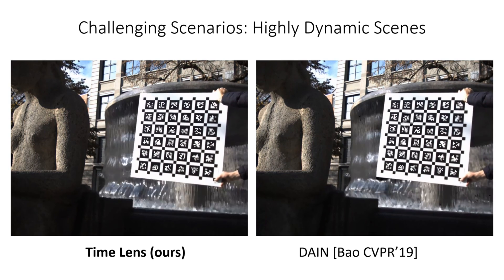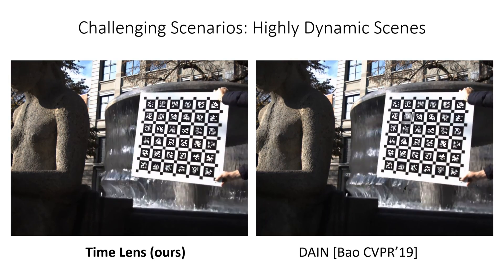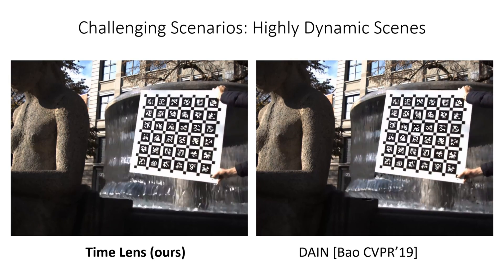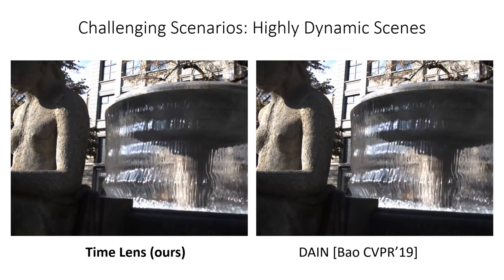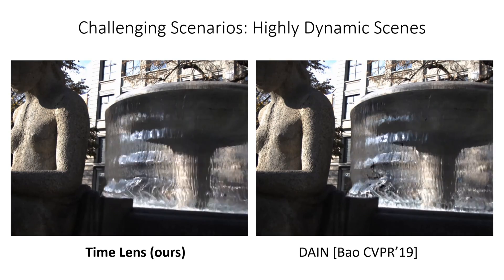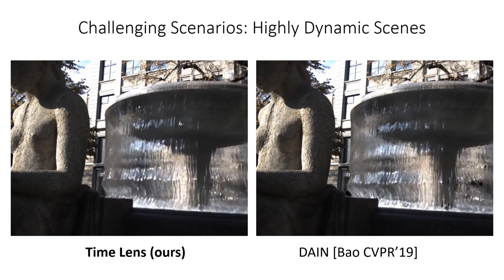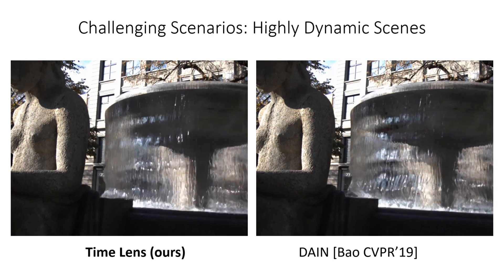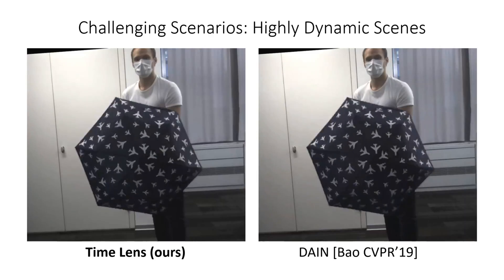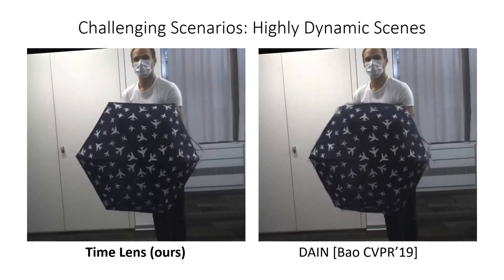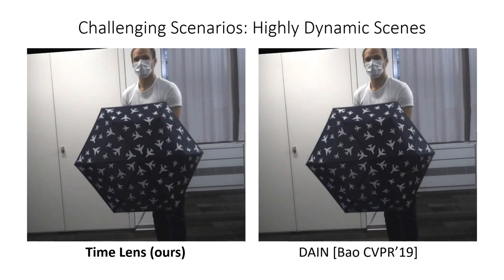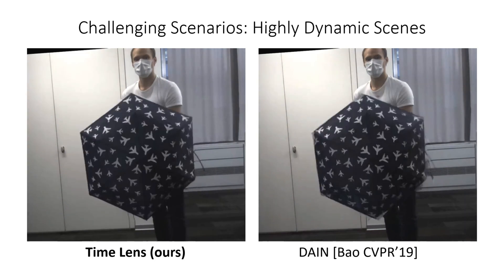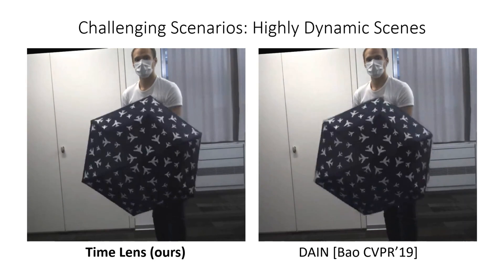By leveraging the complementarity of these modules, Time Lens can handle scenes with repetitive structures which are challenging for frame-based methods due to visual aliasing. Our method can disambiguate these cases by using events between frames. Additionally, due to the linearity assumption of frame-based methods, they exhibit artifacts in the presence of rotating objects such as truncated corners, which do not occur for our method.